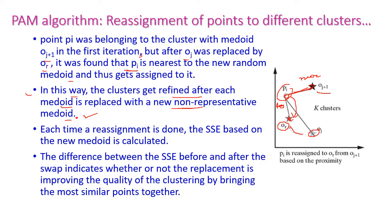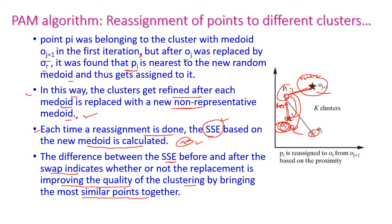Previously, PI belonged to one particular cluster, but after the reassignment of the new representative object, PI is assigned to the new cluster because that distance is smaller. Each time a replacement is done, the SSE based on the new medoid is recalculated. The difference between SSE before and after the swap indicates whether the replacement improves clustering quality by bringing the most similar points together. For every iteration, points move from one cluster to another, and we stop when there is no further replacement of the central medoid.